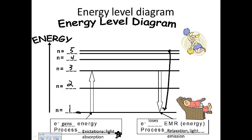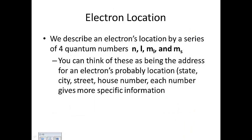Here are your four quantum numbers: N, L, ML, and MS. We're going to go through each one. One analogy is like an address — N is your state, L is your city, ML is your street, and MS is your house number. Each one gives you a little bit more specific information.